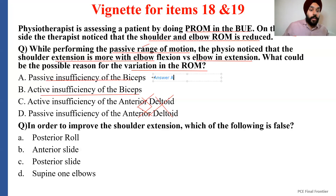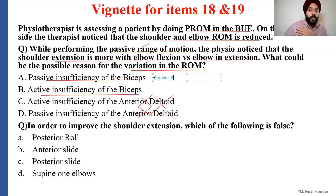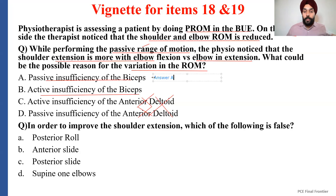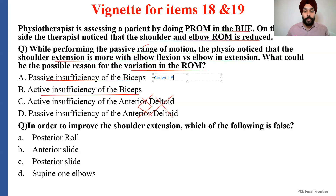But the moment you flex your elbow, you will notice more shoulder extension — this is passive insufficiency of the biceps. The biceps, when stretched at both joints, was restricting shoulder extension. But the moment you flex the elbow, the biceps is isolated and eliminated from the picture because you shortened it at one joint. Now the only muscle being stretched is the anterior deltoid, which is why you have more shoulder extension with elbow flexion. The best way to find out if it's the two-joint muscle or the single-joint muscle restricting motion: you flex the two-joint muscle, and if range of motion increases, the restriction was caused by the two-joint muscle. Now you've eliminated it, and the only muscle stretching is the single-joint muscle.